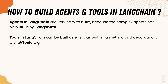In this section we are going to see how we can build AI agents and tools in LangChain. Agents in LangChain are very easy to build; complex agents can be built using LangSmith, which is a different package and platform altogether — but we are not going to cover that in this course. We are going to build a very minimalistic agent for tool bindings and tool calling with our large language model. This section and video are very important, so I highly recommend going through it a couple of times if needed.